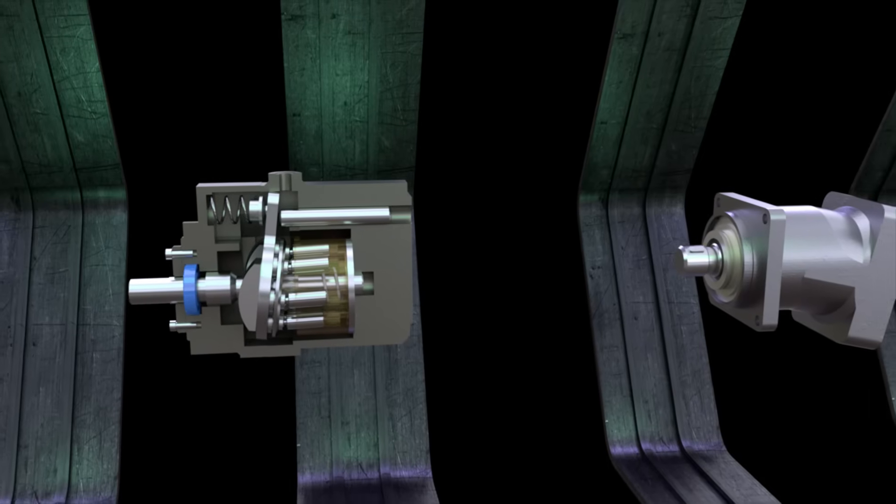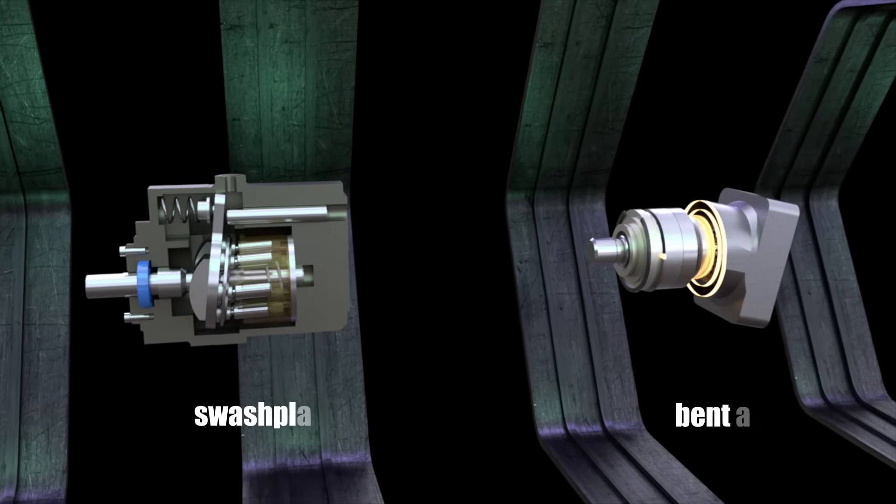In the first case, the device is called a bent axis pump. In the second case, it is a swashplate pump.